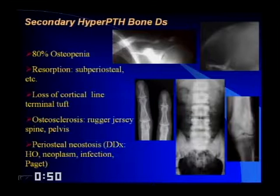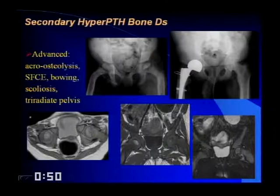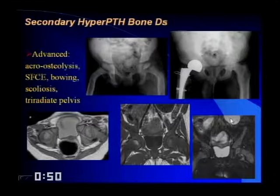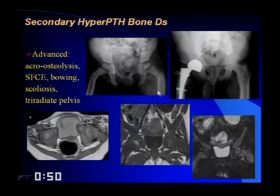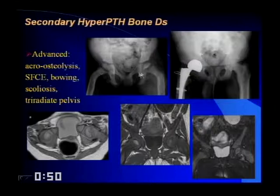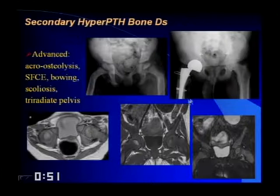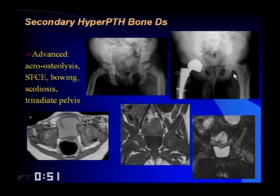In children with more advanced secondary hyperparathyroid bone disease, renal rickets and osteomalacia can be severe. This includes development of slipped femoral capital epiphysis, well seen on MRI, and the triradiate appearance of the pelvis from hip and spine intrusion. Subchondral, subligamentous, and subperiosteal resorption are all present. Bilateral multicystic dysplastic kidneys can be the underlying cause of renal failure driving this process.